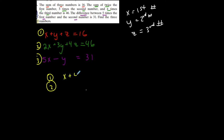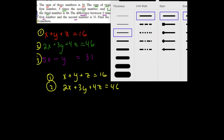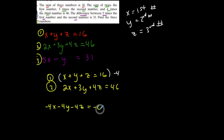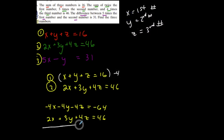So x plus y plus z is 16, and 2x plus 3y plus 4z is 46. When I combine these to eliminate z, the z terms cancel and I'll have just an equation of x and y to match with the third equation of just x and y.